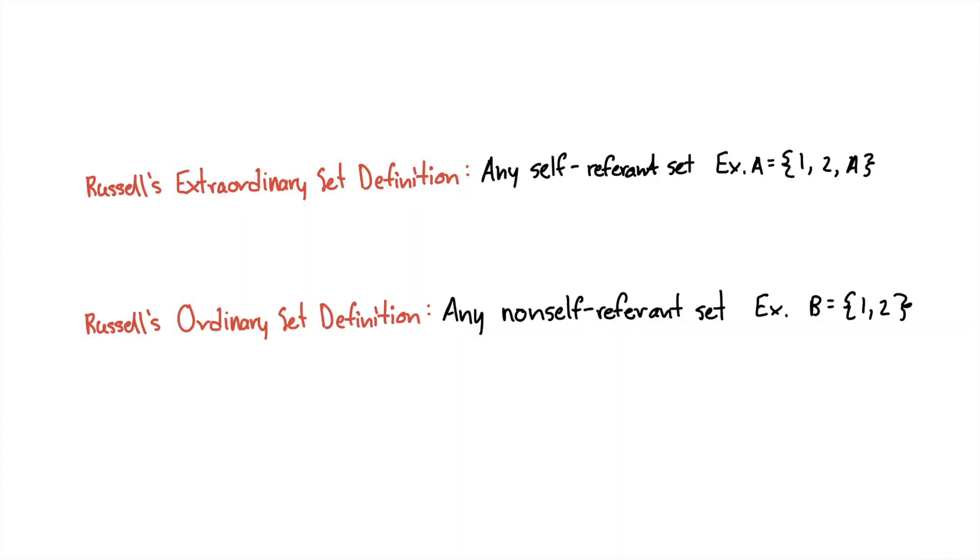So before I reveal the paradox, there's two more definitions we need to understand. The first one is an extraordinary set, and Russell labeled this as any self-reference set. So as we saw just a moment ago, the set A equals 1, 2, A.